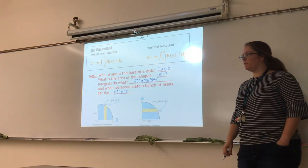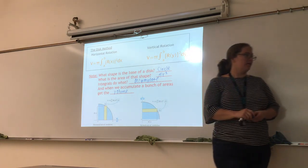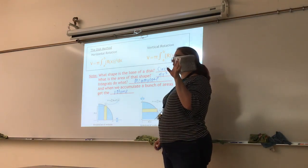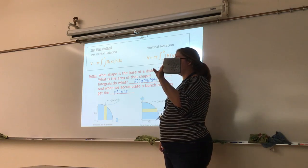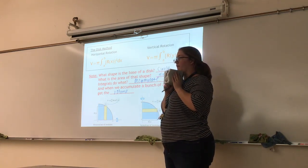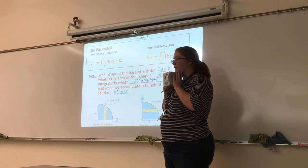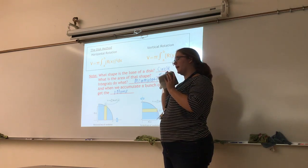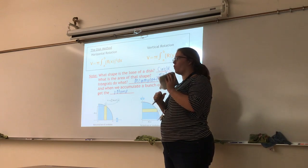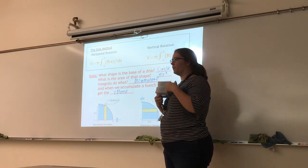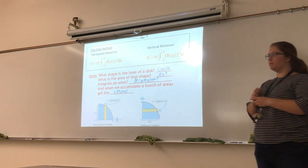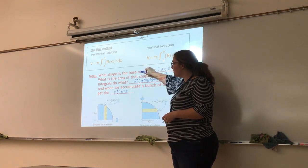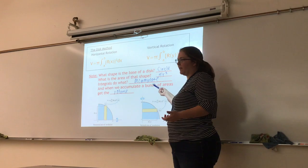Say I pick a different shape for the base of my object. For example, say I wanted to compute the volume of a box — I could do it with calculus. Its base is a square, so I would just integrate side squared. In this case the side is a fixed value, so I'd be integrating something like 4 squared. We can do that for any object to find the volume. You always ask yourself: what is the shape of the base? What's the area of that shape? And then how do I accumulate it using integrals?